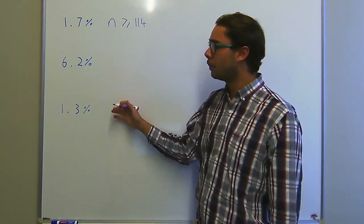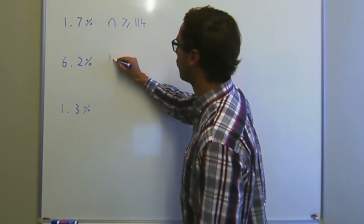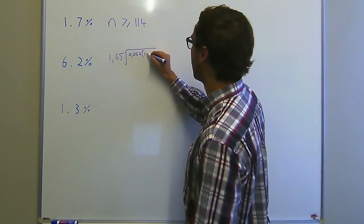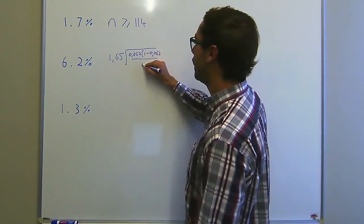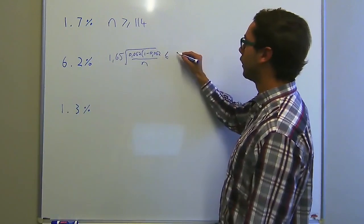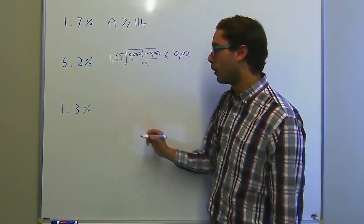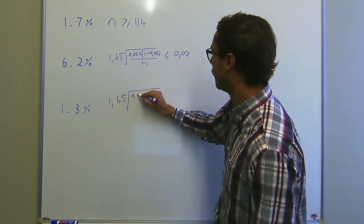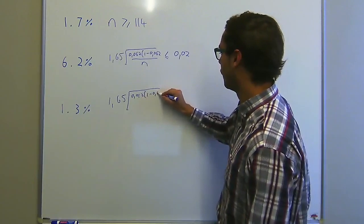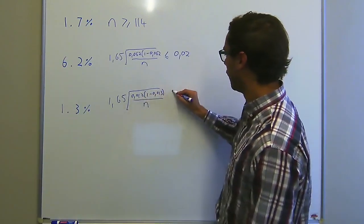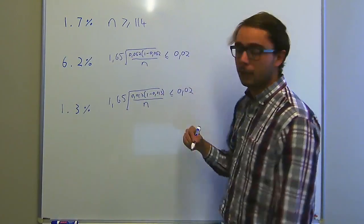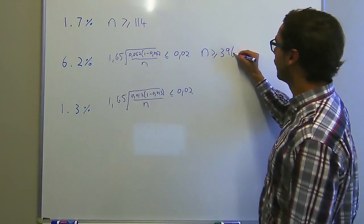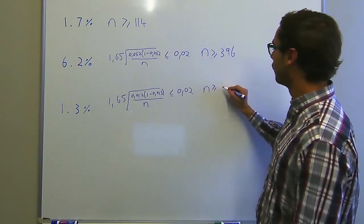And now we simply have to apply the same process to 6.2% and 1.3%. So again we start with 1.65 times the standard error which is 0.062 times 1 minus 0.062 over the N less than or equal to 0.02. So if we now solve for N here we'll see that N has to be greater than or equal to 396 for 6.2% and N has to be greater than or equal to 88.